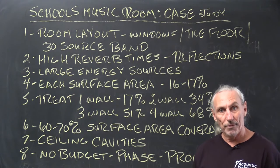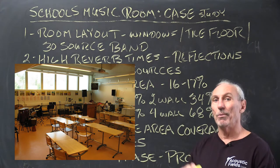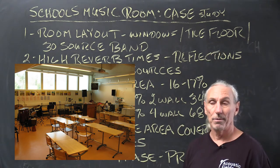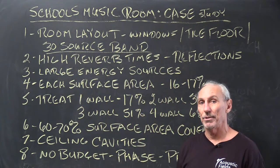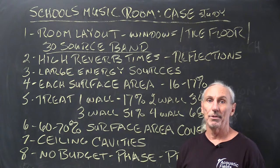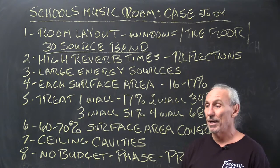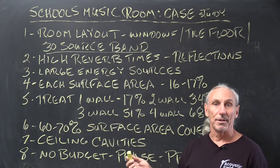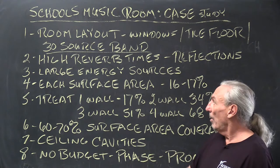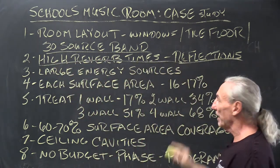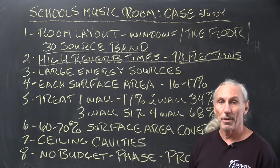If you have the same situation in your room at school, this should be helpful to you. Looking at the room layout in the photo, we've got windows and a tile floor, which most music rooms have because they're easy to maintain. In this situation we had a 30-piece band — 30 sources, 30 instruments producing energy in the room. Basically 30 full-range speakers. The room only sees energy; it doesn't matter if it's a trumpet, trombone, or a singer. The energy has frequency and amplitude.